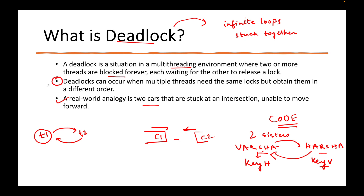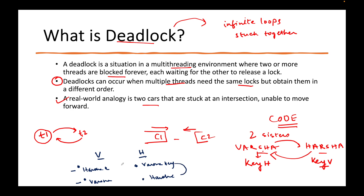The key point is that multiple threads need the same locks but they obtain them in different order. Varsha's thread took Harsha's key first, and Harsha took Varsha's key first. Now Varsha is waiting for her own key and Harsha is waiting for her own key — the order is different. If the order were opposite — if Varsha had taken Harsha's key but Harsha had not taken Varsha's key — there would be no deadlock. Only because both have taken each other's keys and are now waiting for their own is this conflict or deadlock occurring. So this is what we are going to write code for, and we'll see how to prevent it, resolve it, and examine the conditions for deadlock.